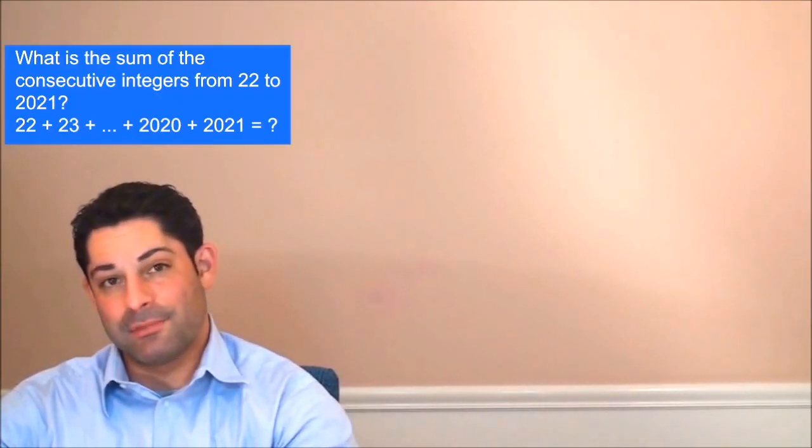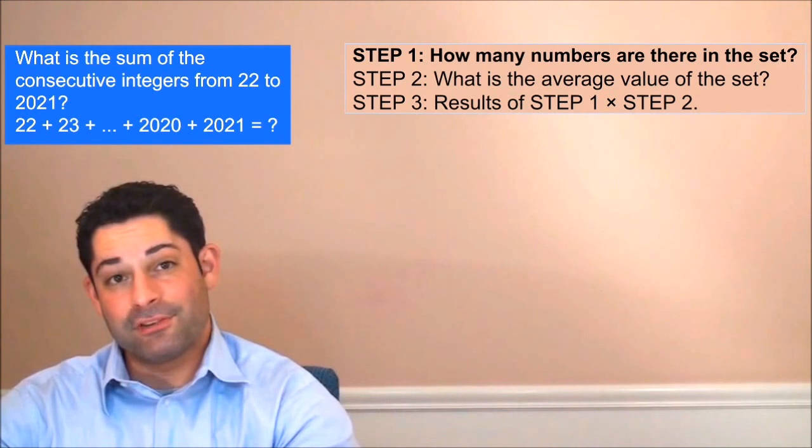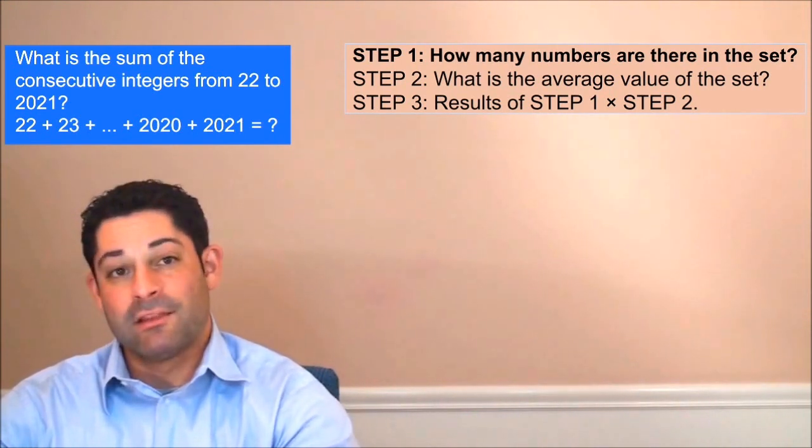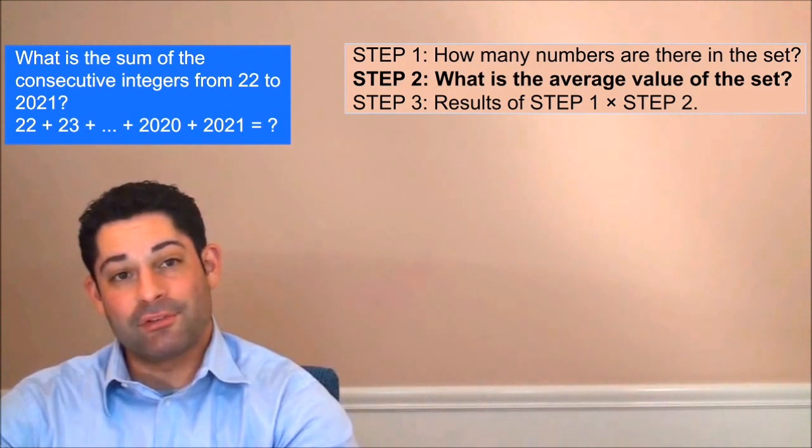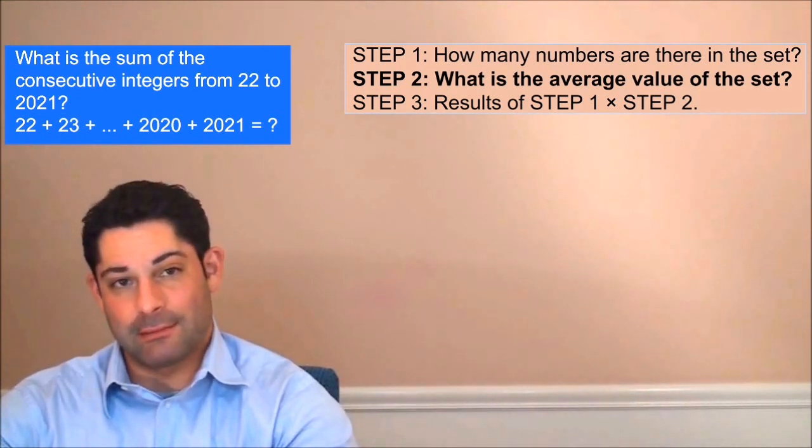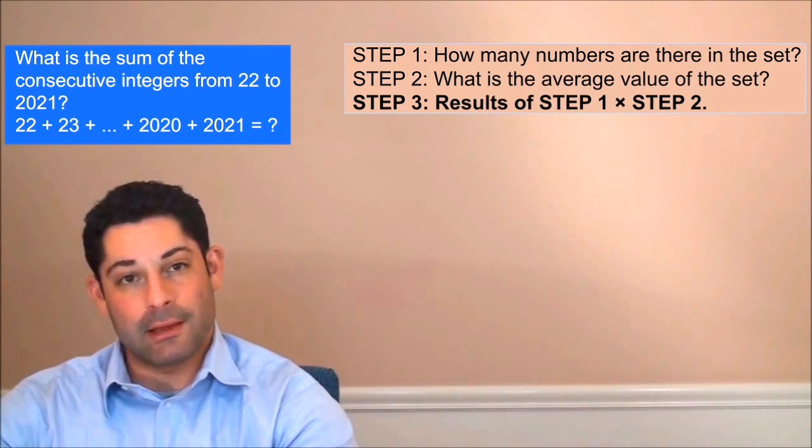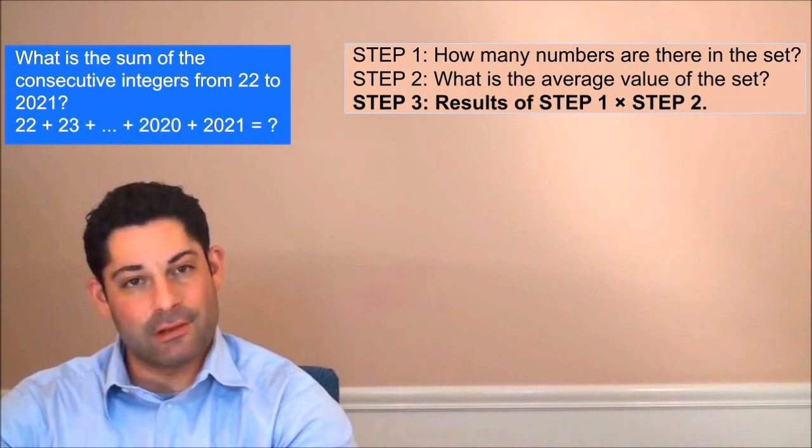Summation problems require three steps. In the first step we determine the number of integers in our set. The second step requires us to find the mean average of the set. And the final step involves multiplying the latter two quantities to find our result.